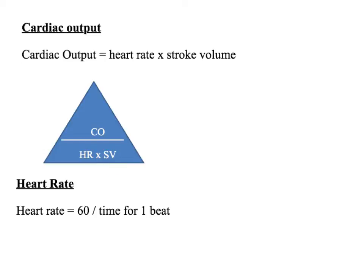You might need to do a two-part calculation — you might need to work out the heart rate individually. A heart rate can be calculated by 60, because there are 60 seconds in a minute, divided by the time for one beat in seconds.